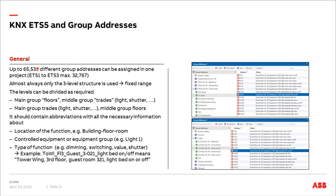The maximum is 65,535 different group addresses in one KNX installation. At the beginning of KNX/EIB more than 30 years ago, ETS 1, 2 and 3 were limited to around 32,000 group addresses — one reason to continue with ETS 5. The two-level or three-level structure is fixed; the middle group ranges from 0 to 7 and the main group from 0 to 31. Some system integrators use main groups for floors and middle groups for trades such as light, shutter, HVAC, heating, or security.